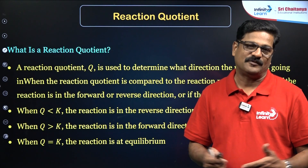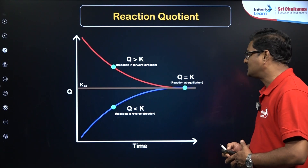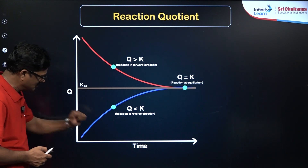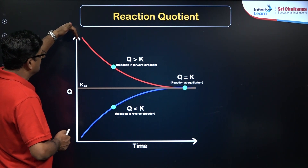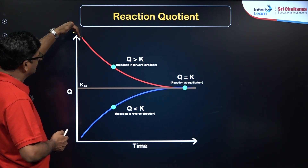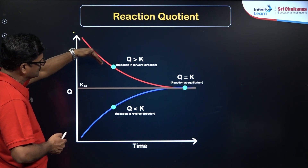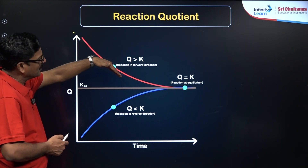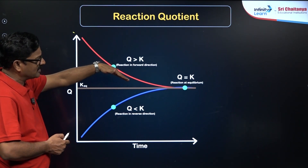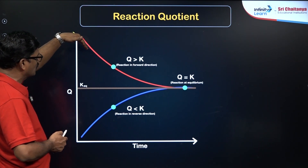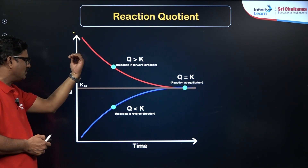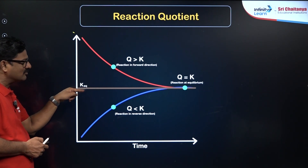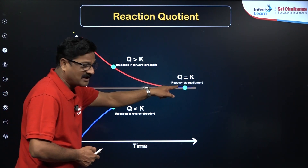The formula for calculating QC or KC, QP or KP is the same. As the reaction proceeds, reactant concentration decreases and product concentration increases; the rate of the forward reaction decreases and the back reaction rate increases. So as the reaction goes on, the Q value gradually increases until it equals K — that state is called equilibrium.